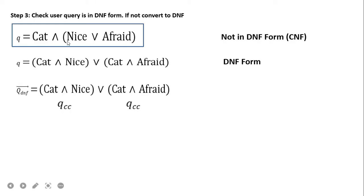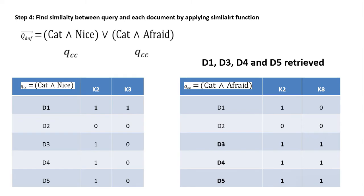The next query is 'cat AND (nice OR afraid).' This is not in DNF form; it is in CNF format. We convert it to DNF by expanding: (cat AND nice) OR (cat AND afraid). This is now in DNF format. This is q_dnf, and each part is represented by a qcc. We check both qcc terms with an OR between them. For 'cat AND nice,' keywords k2 and k3 are used. Since the operator is AND, both must be present — only document d1 qualifies.